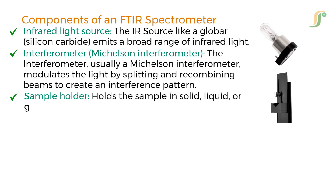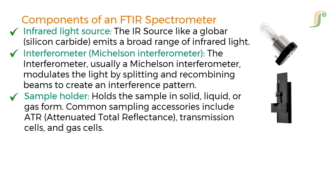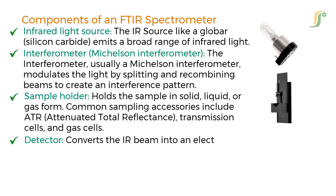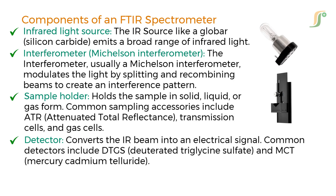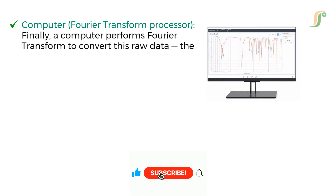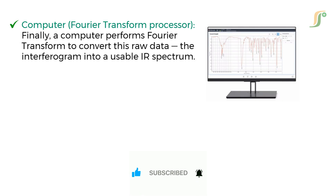The Sample Holder holds the sample in solid, liquid or gas form. Common sampling accessories include ATR, i.e. attenuated total reflectance, transmission cells, and gas cells. Next is the detector, which converts the IR beam into an electrical signal. Common detectors include deuterated triglycine sulfate and mercury cadmium telluride. Finally, the computer, i.e. Fourier transform processor, performs a Fourier transform to convert the raw data — the interferogram — into a usable IR spectrum. That's where FTIR gets its name.